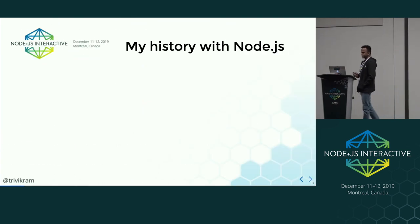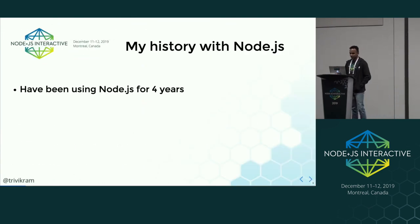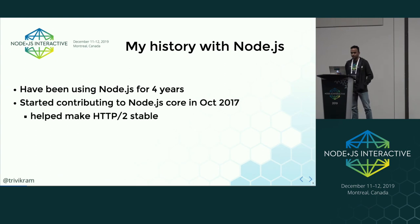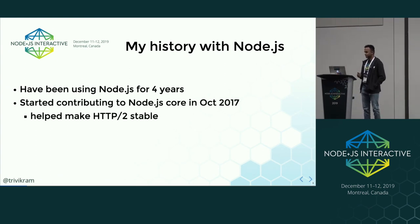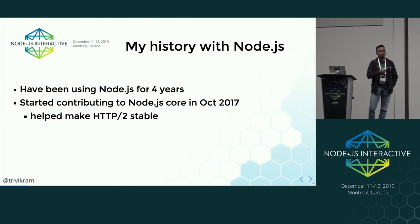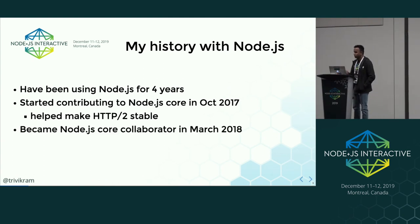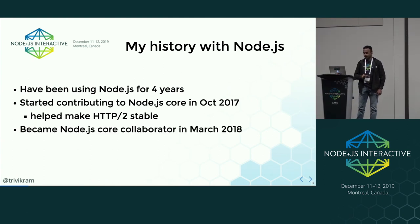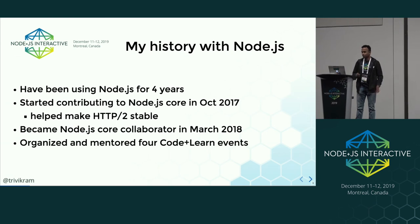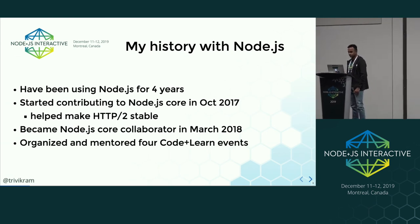What's my history with Node.js? I've been using Node.js for four years. I started contributing to Node.js core in October 2017, helped make HTTP/2 stable, wrote unit tests and fixed some bugs. You can do the same with HTTP/3 — we'll cover that. I became a Node.js core collaborator in March 2018, and I organized and mentored four code-and-learn events.